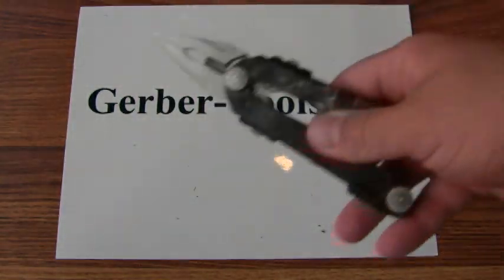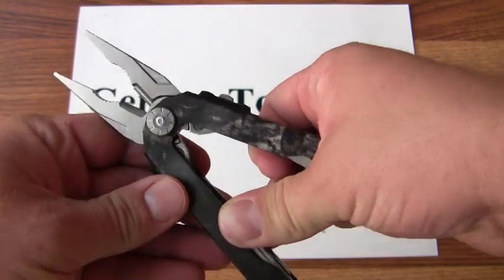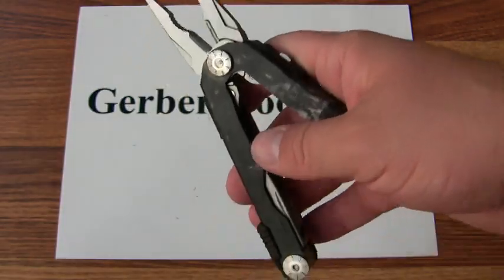As you can see, it's got the reinforced plier jaws on it with a nice wire cutter in the middle.